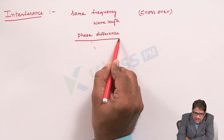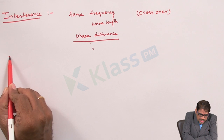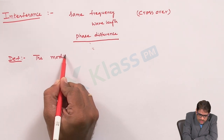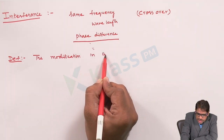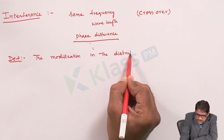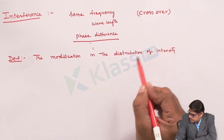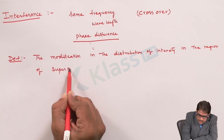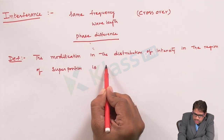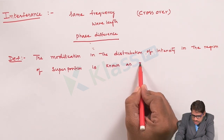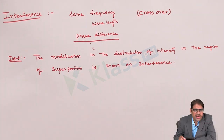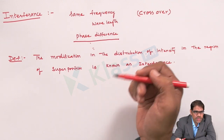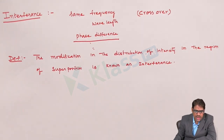As far as the actual definition is concerned, the modification in the distribution of intensity in the region of superposition is known as interference. The intensity gets distributed within the respective region, which we call the crossover region or the superposition region, according to the definition of interference.